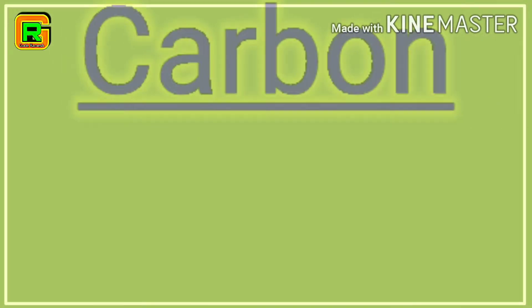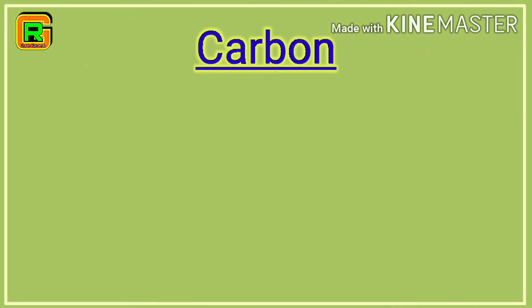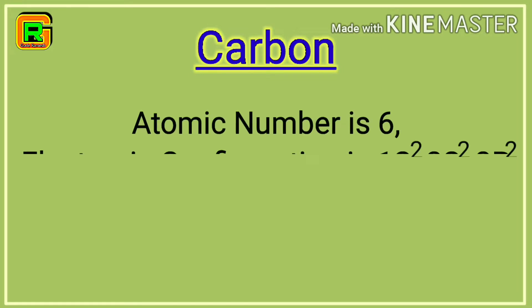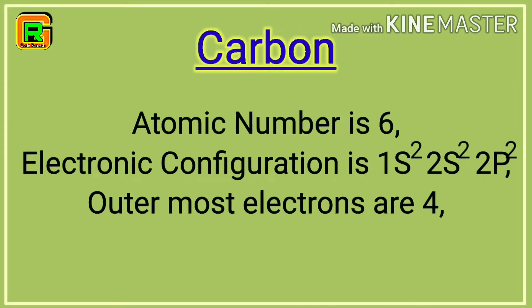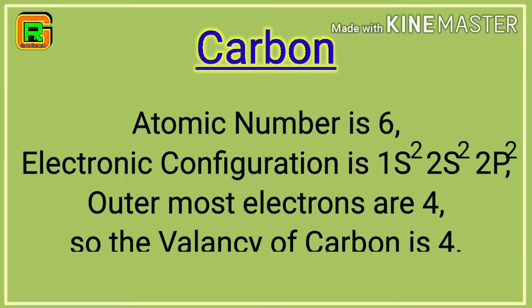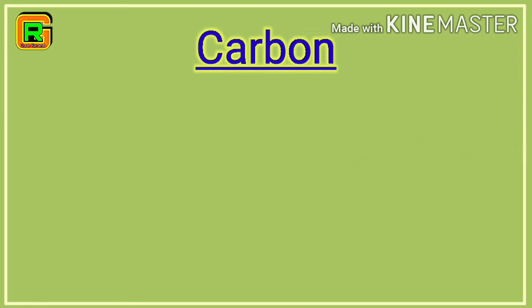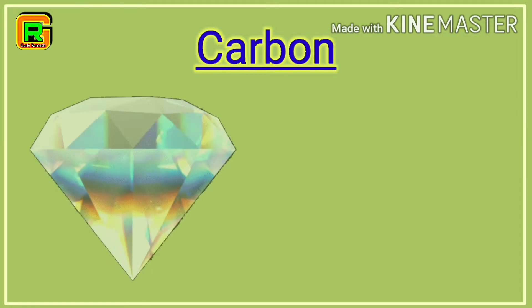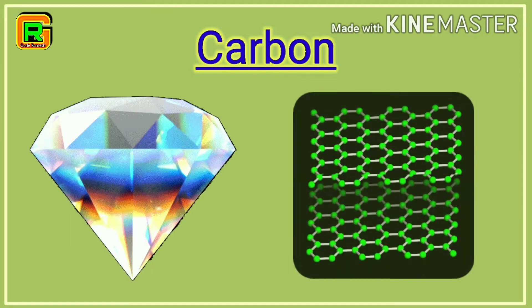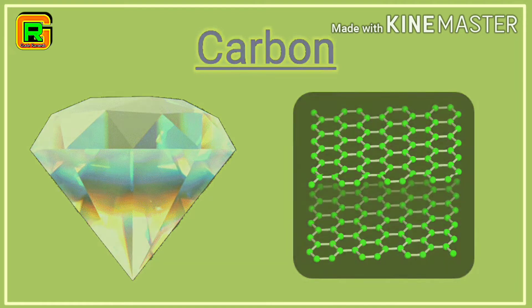Good morning to all. Carbon atoms can arrange themselves into different hybridized chemical bonds. Therefore they exhibit different physical and chemical structures such as diamond and graphite. Today in this video we are going to learn more about diamond and graphite with their 3D models.